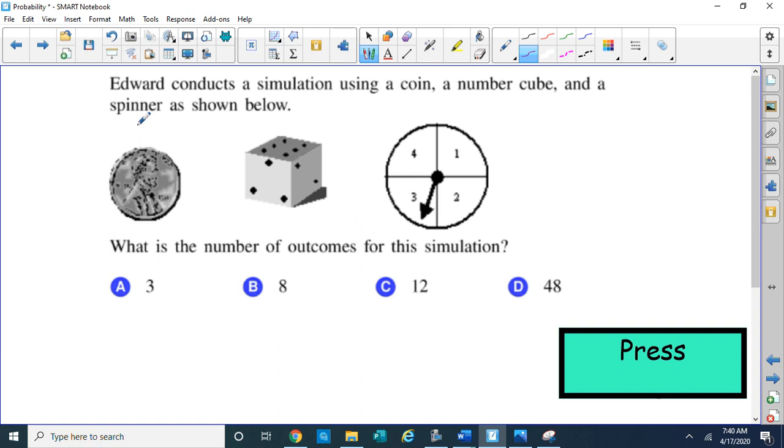When he tosses his penny, what could he get? He can get a head, or he can get a tail. That's two outcomes. When he tosses the dice cube, he can get a 1, 2, 3, 4, 5, or 6. So there's six different outcomes he can get. And when he spins the spinner, he has four numbers on it. He can get a 1, 2, 3, or 4 with the spinner. So there's four different items he can get.